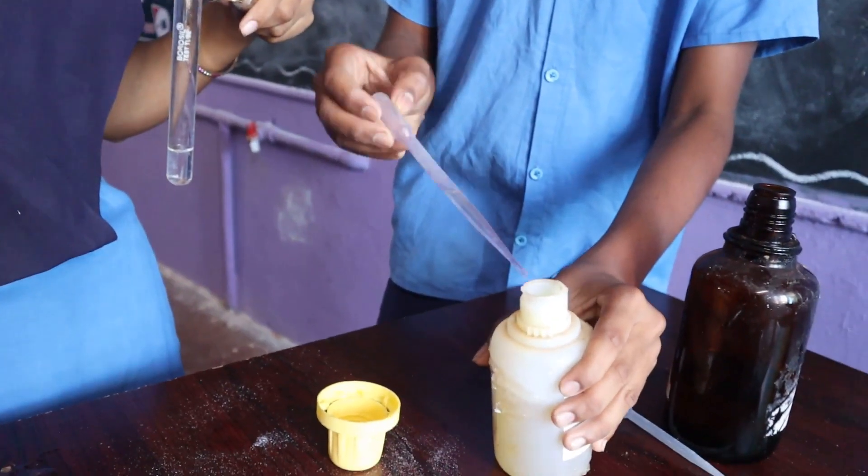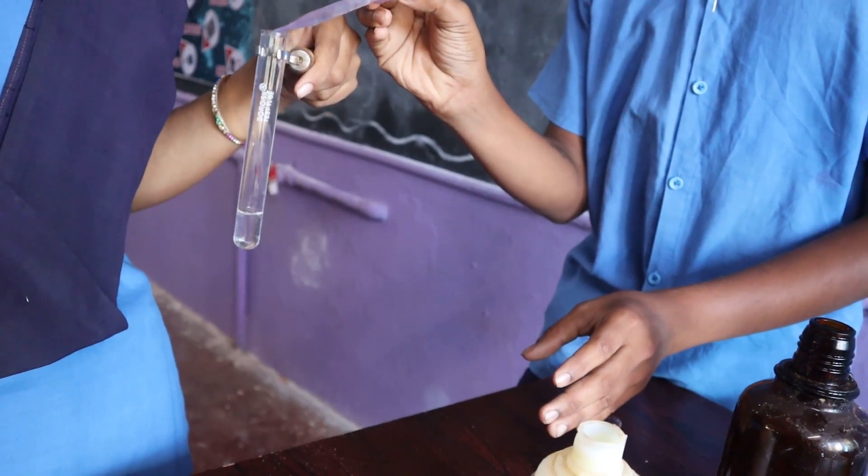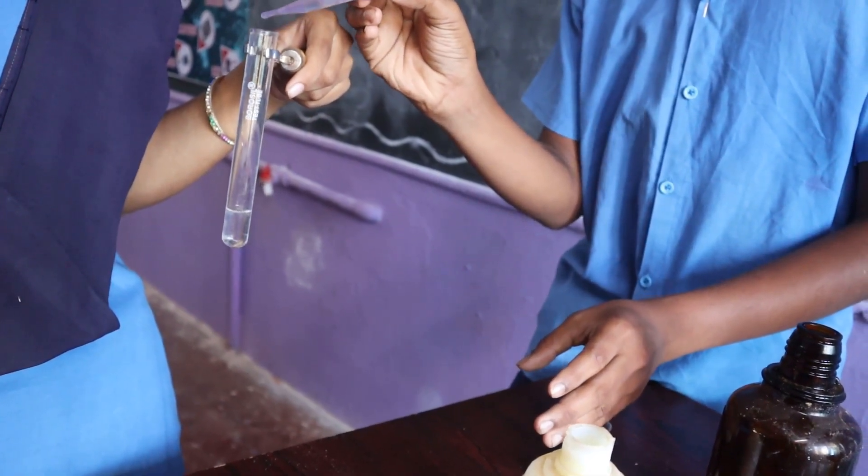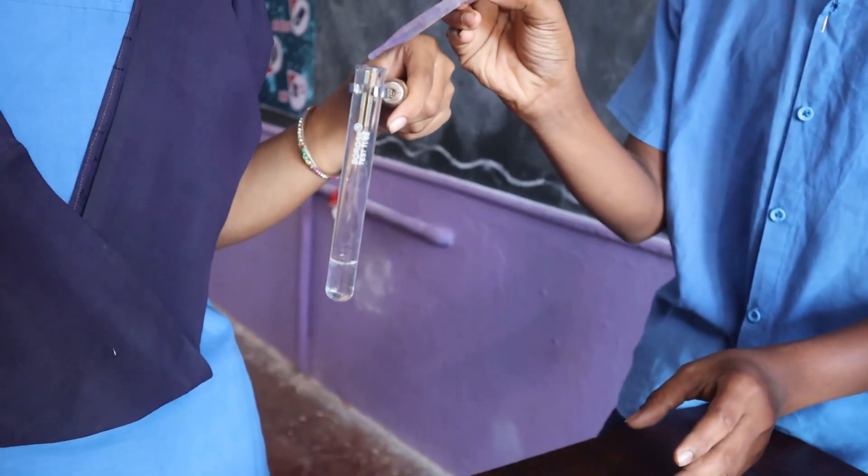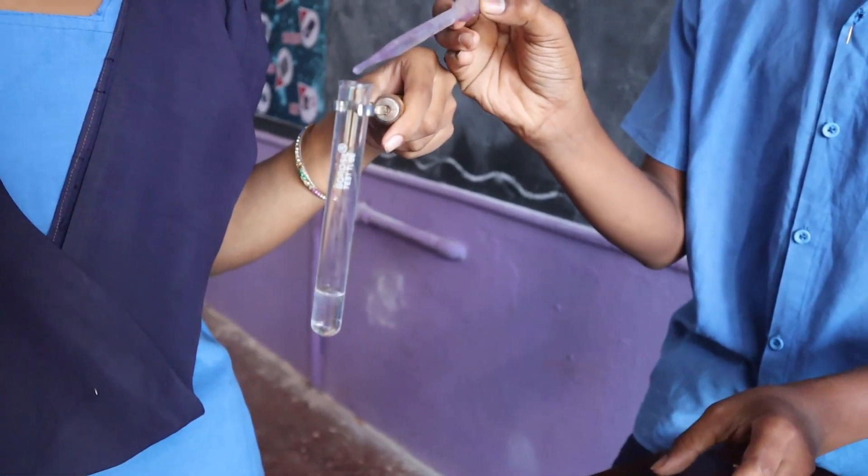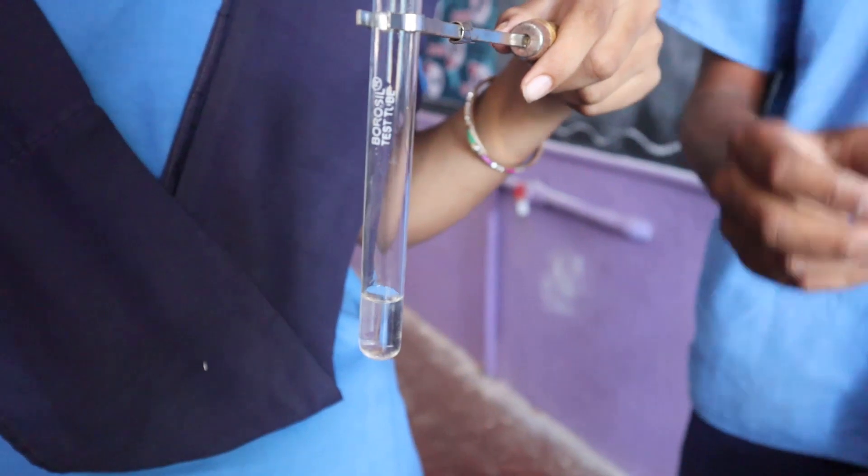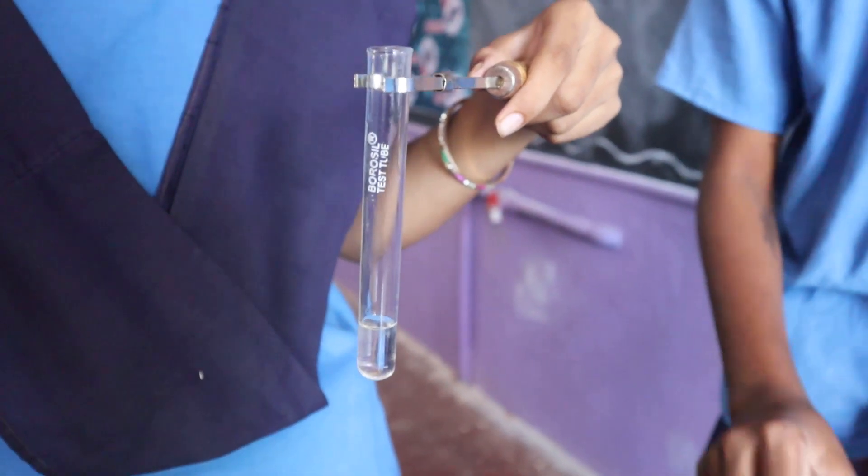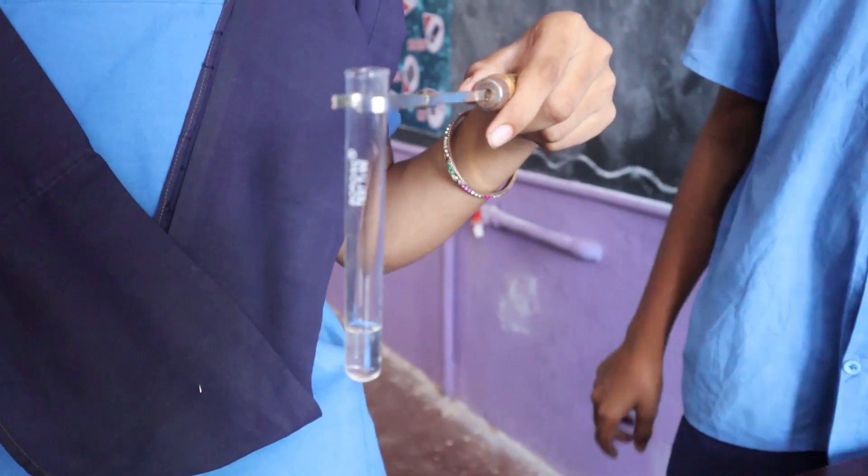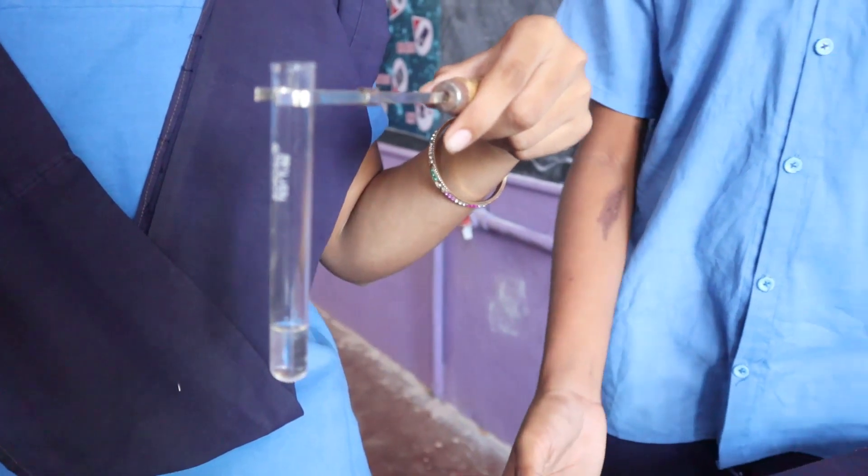Add a few drops of phenolphthalein indicator solution to the acid and observe its color. We notice that there is no change in color. From this, we can say acid solution shows no change in color when phenolphthalein is added.